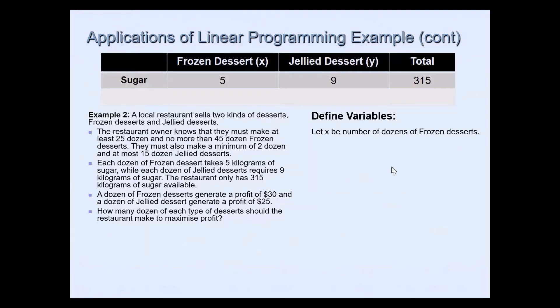We need to define the variables. So let x be number of dozens of frozen desserts and y be the number of dozens of jellied desserts. And what I've done is I've created a table from the problem that was in context. So frozen dessert is denoted by x, jellied is y, and then the ingredient was sugar in this case. So 5 kilograms for frozen, 9 kilograms for jellied, and the total available was 315.